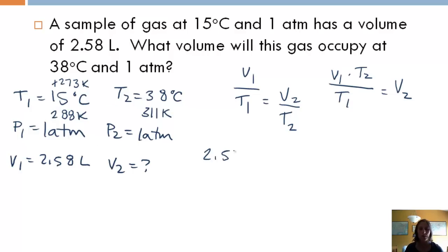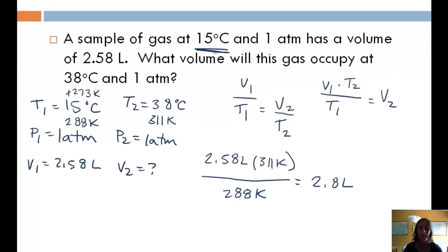So my V1 is 2.58 liters times my T2, which is 311 Kelvin. I'm going to divide that by my T1, which is 288 Kelvin. And I've already calculated this out. We should get 2.8 liters, and that's with two significant figures, which is what our problem states we need.